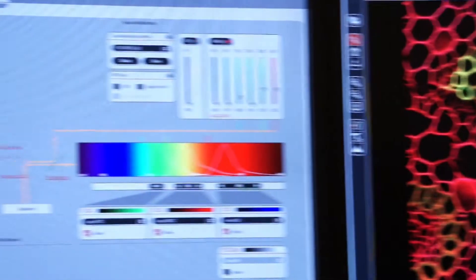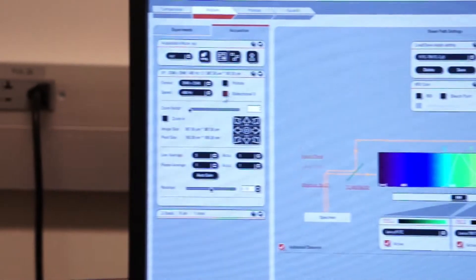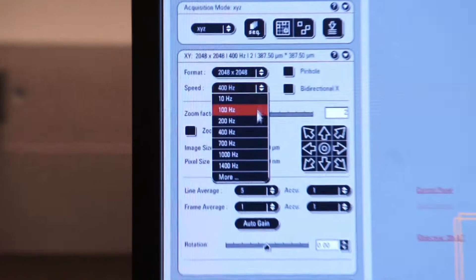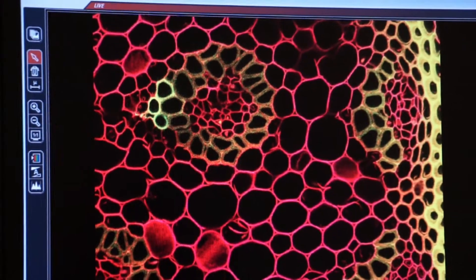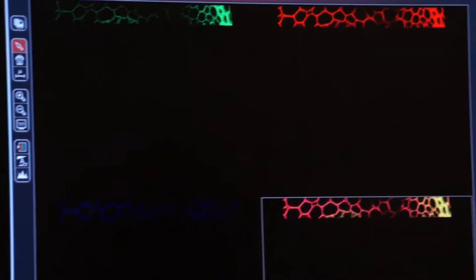Well, I can go back over to my speed pulldown menu and let's say I want to increase it to 700 hertz. So now I'm going to capture my image. We'll watch it again. And this should prove to be a little faster than it was last time.